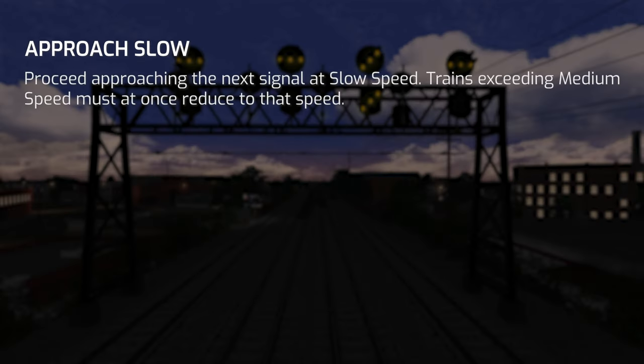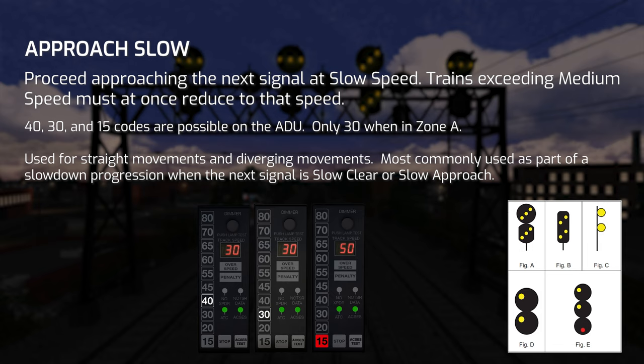Approach Slow means to proceed approaching the next signal at slow speed. Trains exceeding medium speed must at once reduce to that speed. This is pretty much the slow speed variant of Approach Medium. Possible ADU codes when passing Approach Slow are 40, 30, and 15. Approach Slow is an advance warning to be going slow speed before passing the next signal. Slow speed is typically 15 mph but can be up to 30 mph in ASC territory. Approach Slow is most commonly seen when continuing straight but can also be used for diverging movements at interlockings.